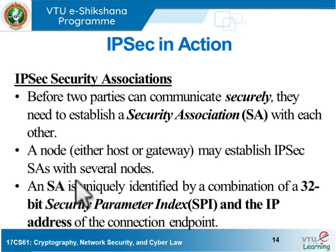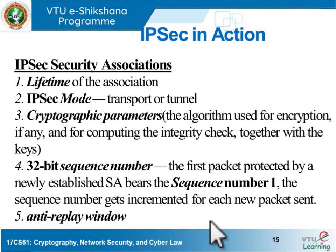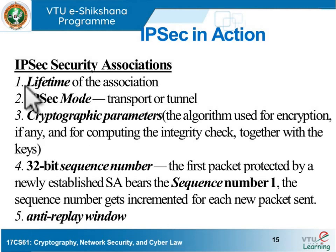A node may establish IPsec security associations with several other nodes — not just one. A security association is uniquely identified by a combination of a 32-bit Security Parameter Index (SPI) and the IP address of the connection endpoint. The first field in a security association is the lifetime — the time duration for which that association is valid.